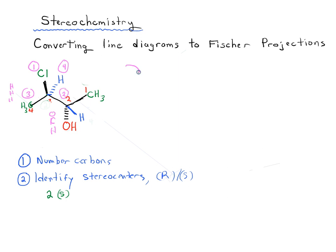In this case we go one, two, and three. And it is clockwise, which would make it R. And number four is in the back. So number four is in the back. Carbon three is R. Okay, good. And so done. We figured out R and S for our line diagram.